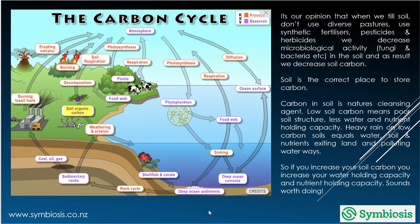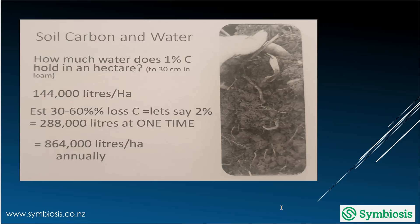A key takeaway is that if we can increase soil carbon, we can increase our water holding capacity — and that's really what we're trying to do in any productive environment. If we can increase our soil carbon by one percent, we increase our water holding capacity per hectare by 144,000 litres, making us much more tolerant in a drought environment.